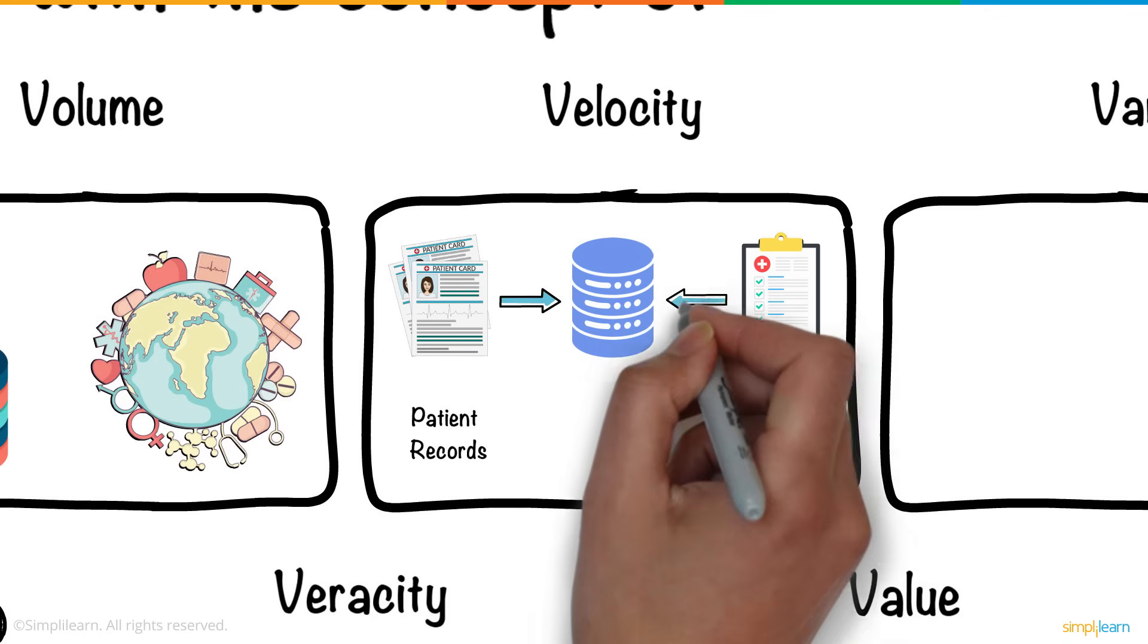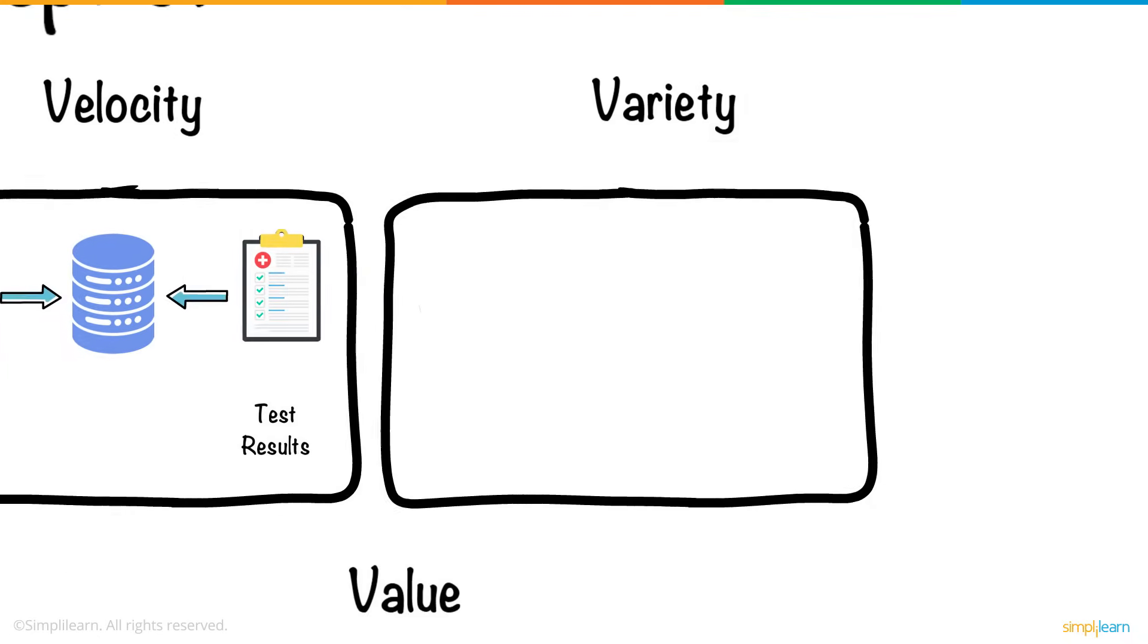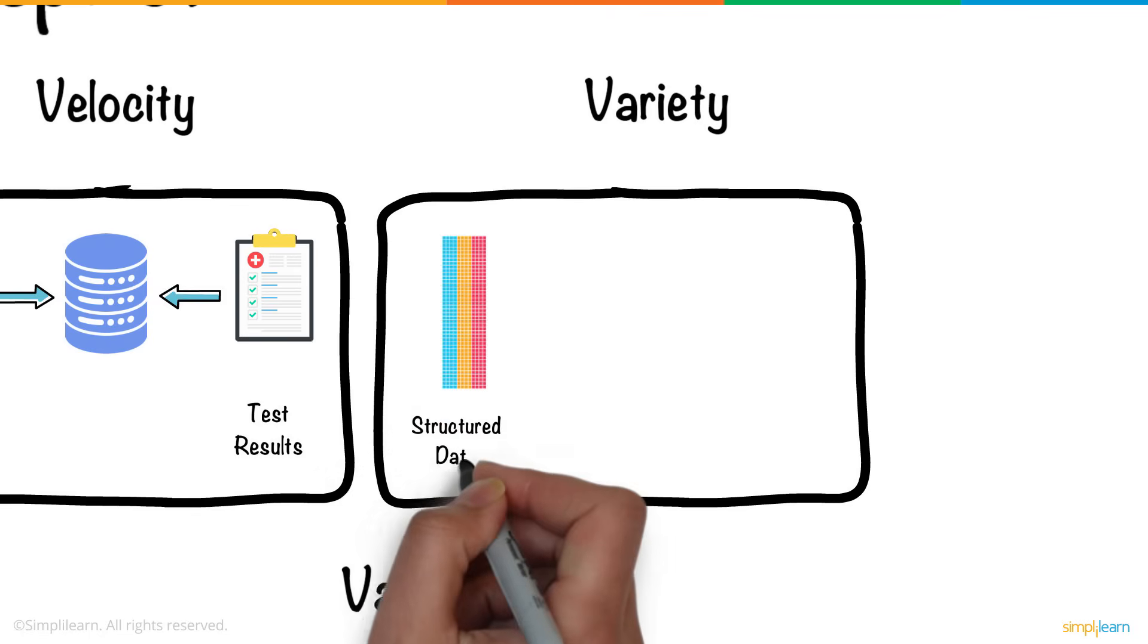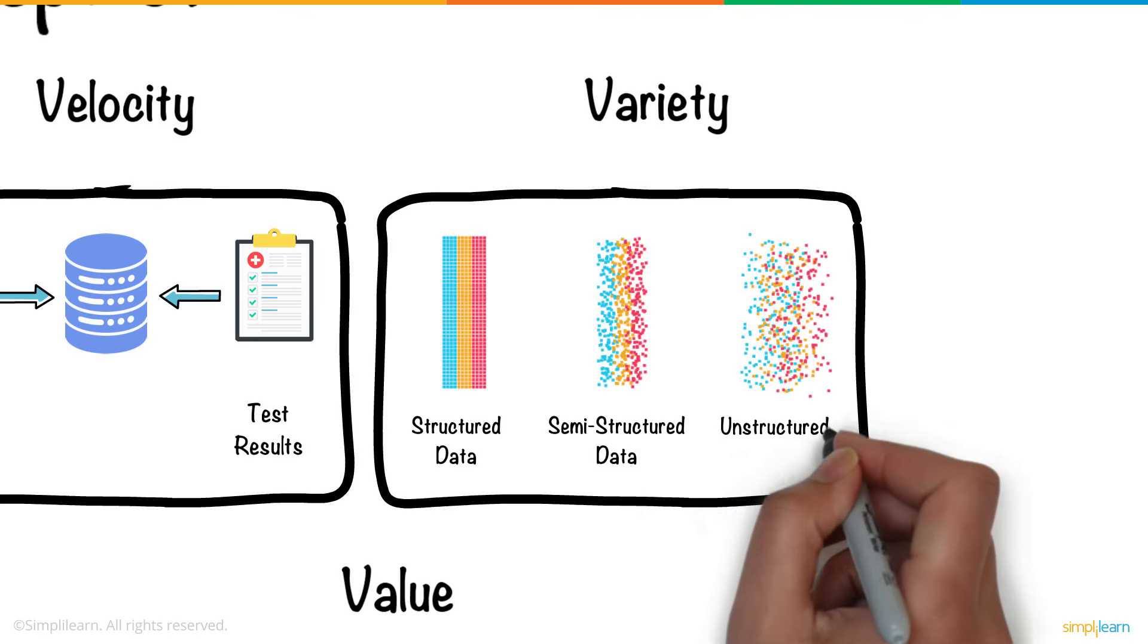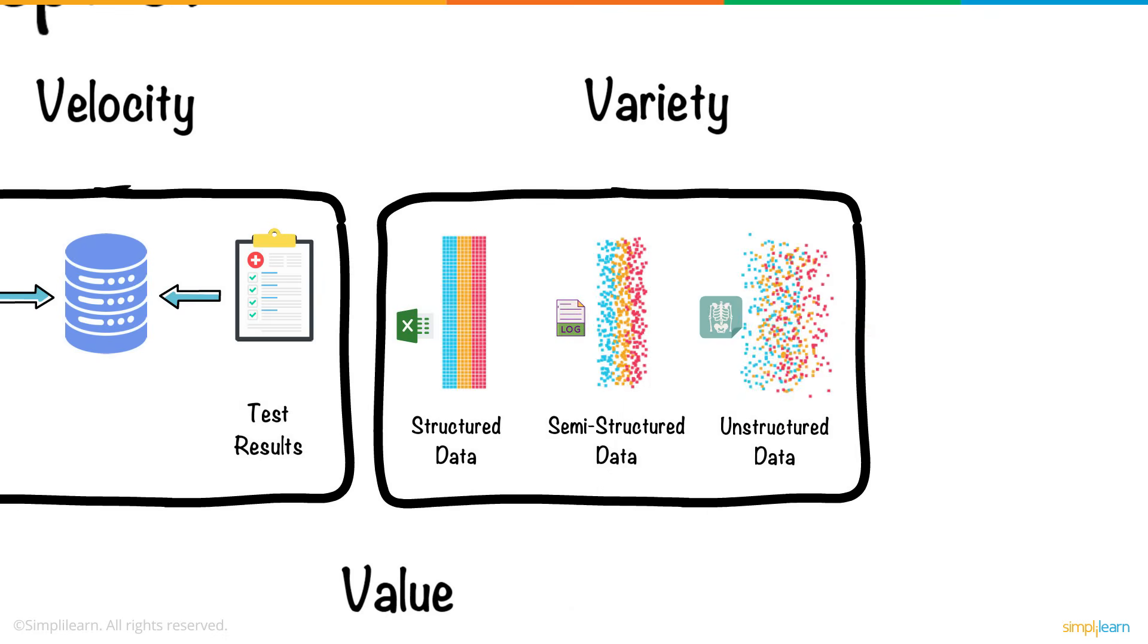All this data is generated at a very high speed, which attributes to the velocity of big data. Variety refers to the various data types such as structured, semi-structured, and unstructured data. Examples include Excel records, log files, and x-ray images.